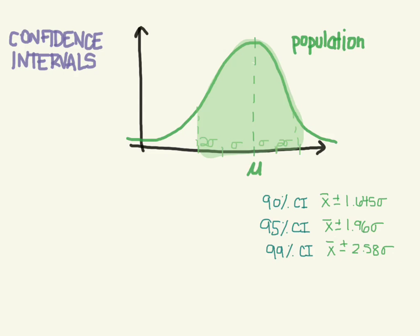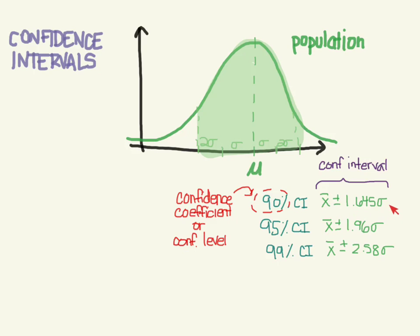And so these values you could get out of a Z table. And if you want to know the names of these things, I don't think you really have to, but I'll tell you. This thing here is called the confidence coefficient or the confidence level. We already know that this is called the confidence interval, but we can break each one of these things up.